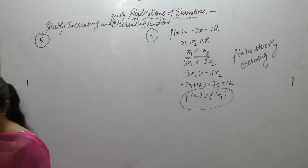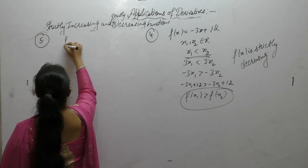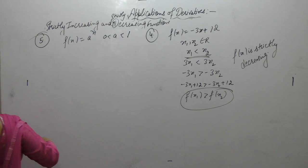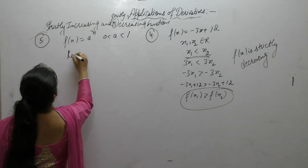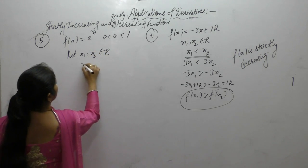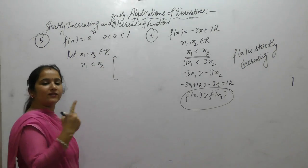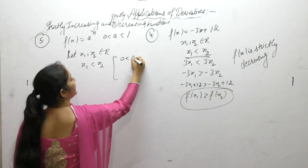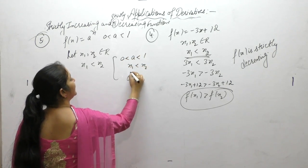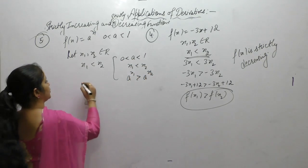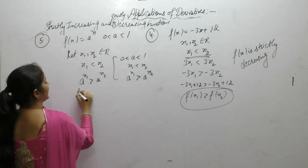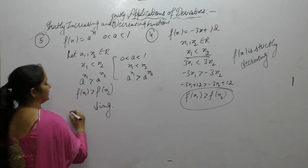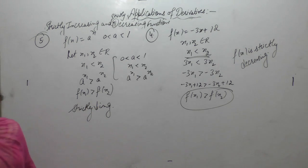Show that f(x) = aˣ where 0 < a < 1 is strictly decreasing. Let x₁, x₂ belong to ℝ with x₁ < x₂. When a > 1, aˣ¹ < aˣ², but here the value of a lies between 0 and 1, so aˣ¹ > aˣ². This means f(x₁) > f(x₂). Therefore the function is strictly decreasing.